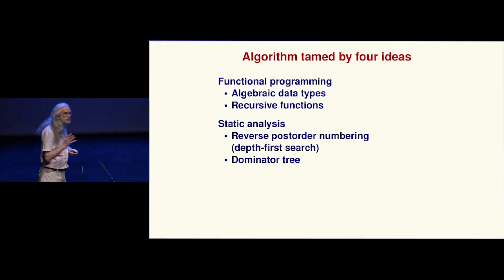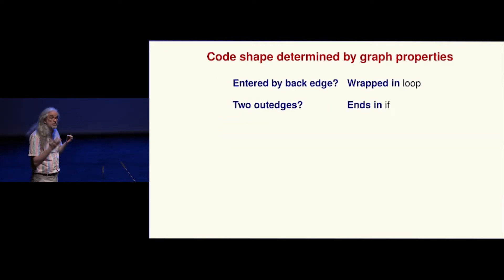And then there's a couple of key compiler ideas that are bog standard. One is to number the nodes in the graph with a reverse post-order numbering—this is just a depth-first search. The other is to use a dominator tree, which I will explain. But I want to start with the graph properties, because the graph properties tell us what shape of code to emit when we're translating a control flow graph node.